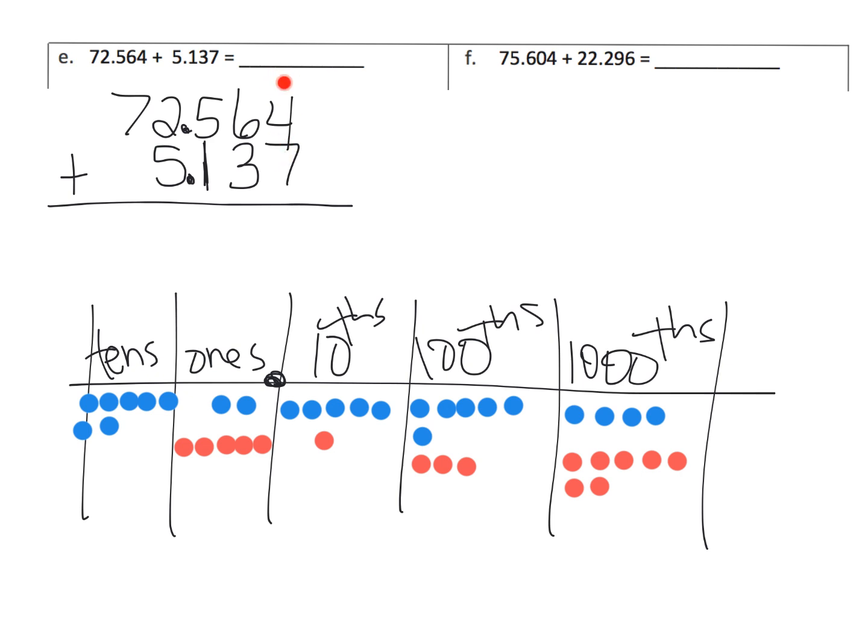And so you've got 4 thousandths plus 7 thousandths. That gives us 11. So that means we're going to put a 1, carry the 1. And then we've got in the hundredths place, we've got 1, 6, plus 3. So that's 10. 10 hundredths. So that means we're going to have 0 left over and we're going to cache all 10 of those into the tenths place.